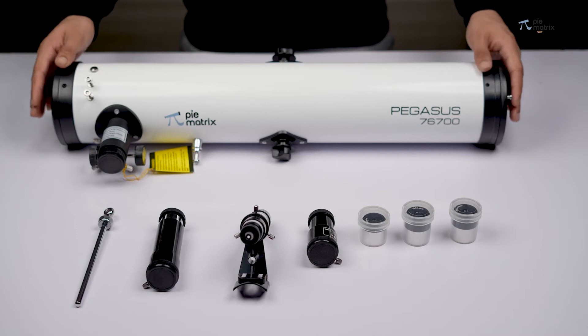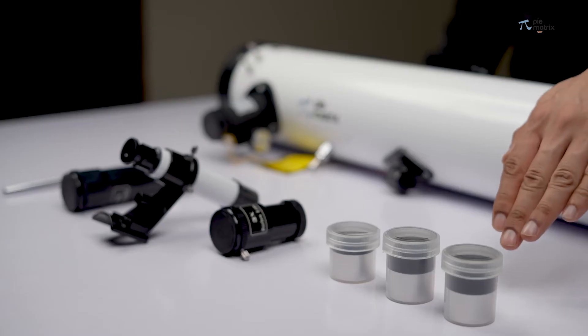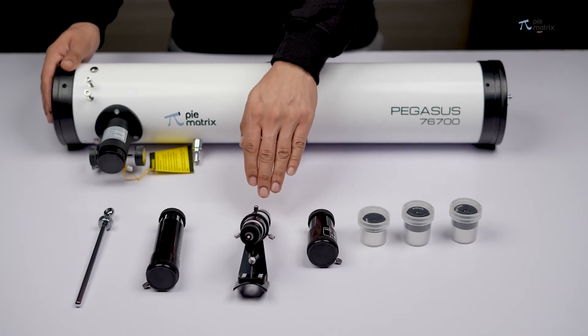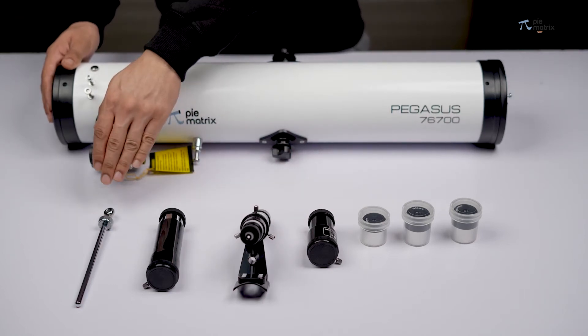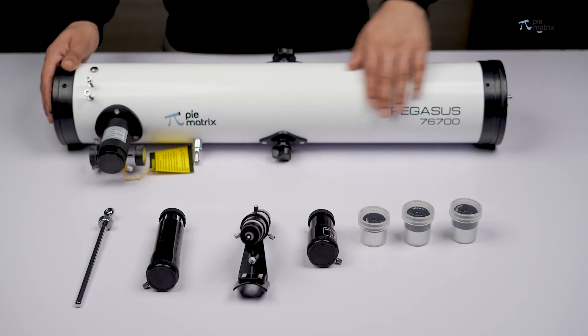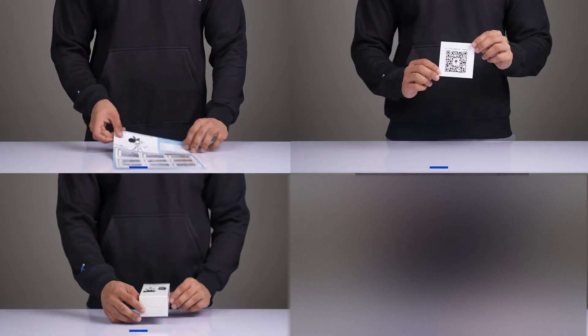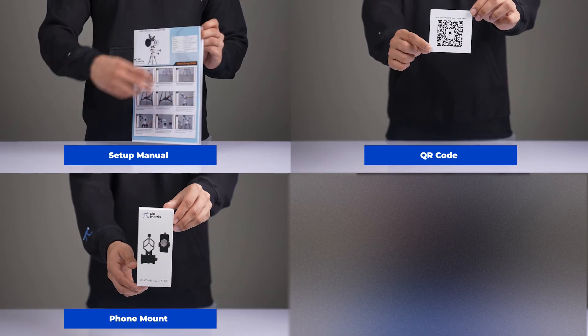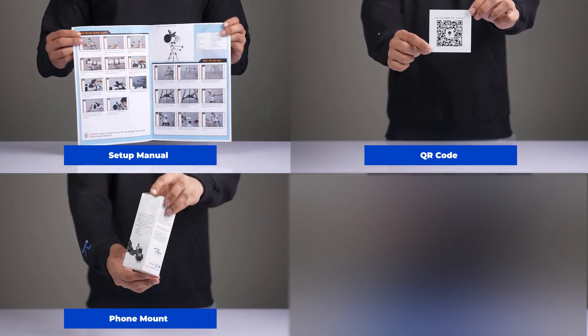Inside the box, we also get a set of three 1.25 inch eyepieces, 3x barlow, finder scope, 1.5x erector and slow motion control knob. We also get other complimentary things like the setup manual, all-in-one QR code, and phone mount.